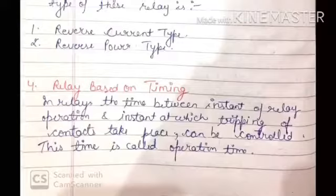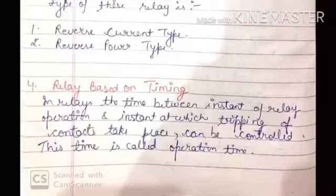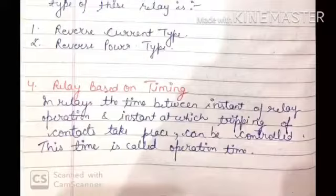Timing-based relays are of three types. First, instantaneous type: no time is lost between the operation of the relay and the tripping of contacts — no intentional time delay is provided. Second, definite time lag type: in this type, an intentional definite time lag is provided between the operation of the relay and the tripping of the contact. Third, inverse time type: in this type, the operating time is approximately inversely proportional to the magnitude of the actuating quantity.